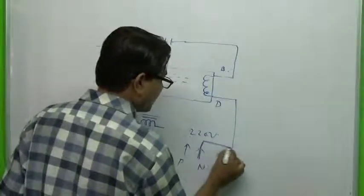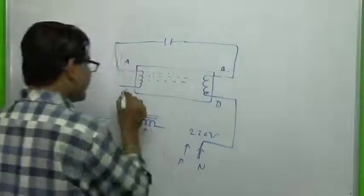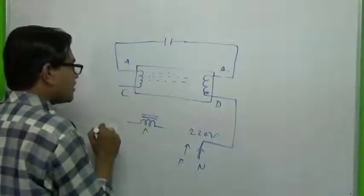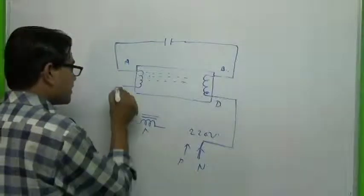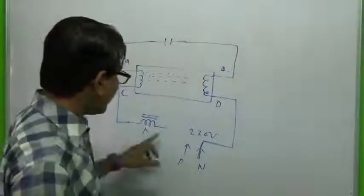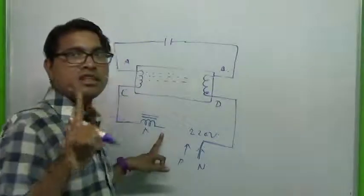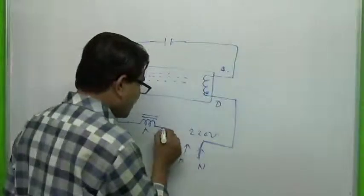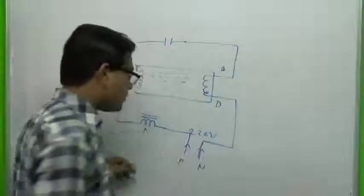The other terminal, which is C terminal, is connected to the choke. Now we have one terminal of the choke left, so this terminal will be connected to the phase.